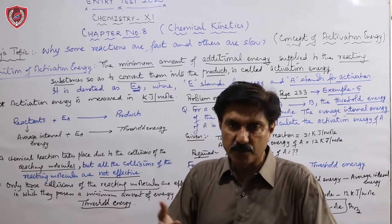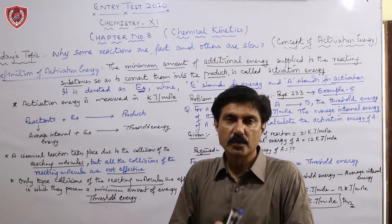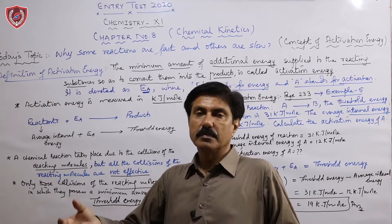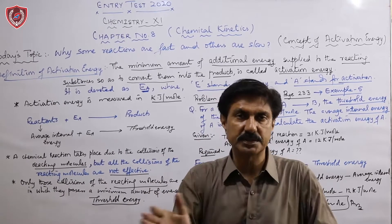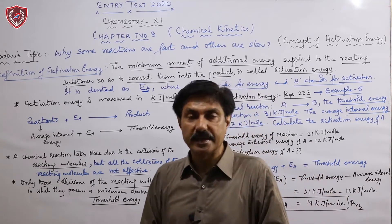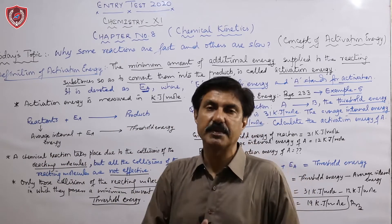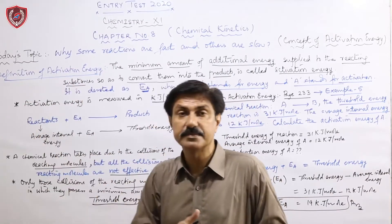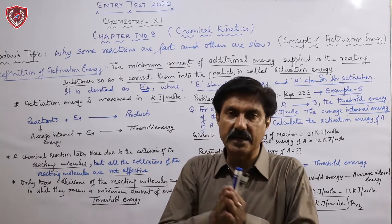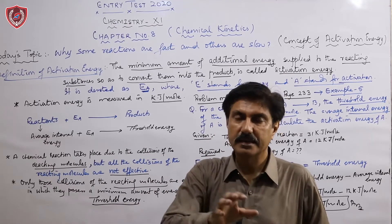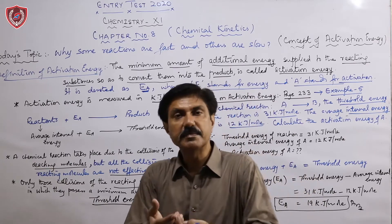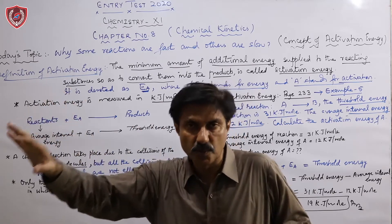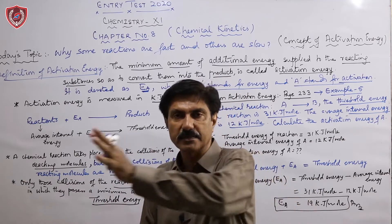When two or more substances are mixed together, every reaction has its own specific average internal energy. Additionally, we supply energy in the form of heat or temperature from outside sources/surroundings. The average internal energy of reacting particles and the energy we supply in the form of heat combine together, bringing the reaction's energy to a specific level called threshold energy. When reactants' average internal energy and the activation energy we supply both combine, the reaction reaches threshold energy level and the reaction completes — reactants convert into products.